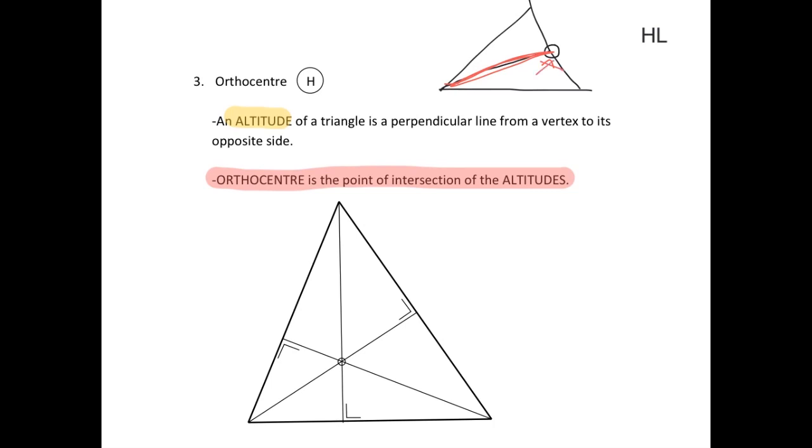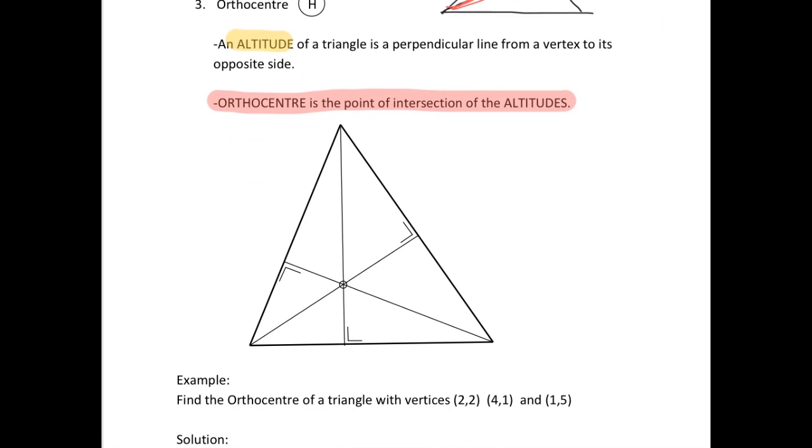In the case of the orthocenter the lines must go from one vertex to the opposite side but it has to be at right angles. So you'll see for example here from this vertex perpendicular to the opposite side is just a straight line down.